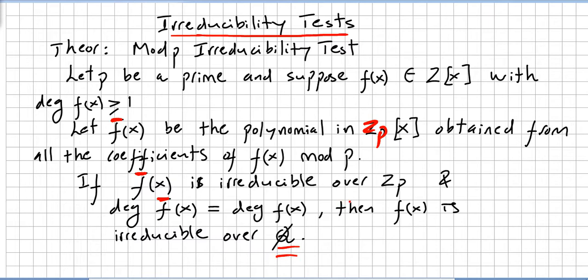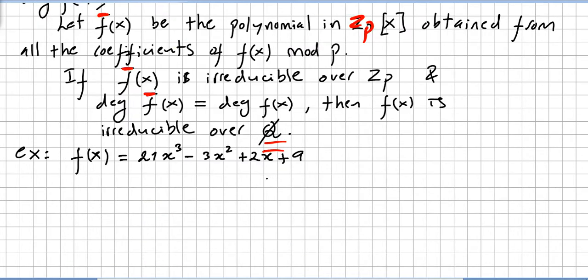Better to see a couple of examples now. Okay, very first example. Example number one. We are going to pick this polynomial: 21x³ - 3x² + 2x + 9.